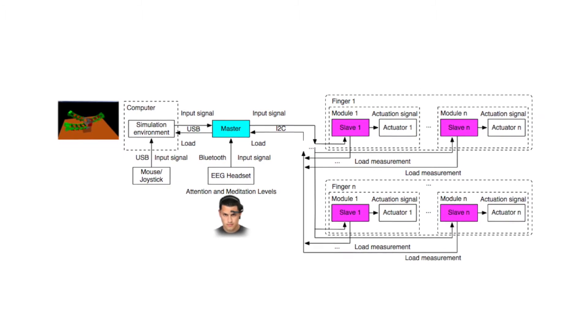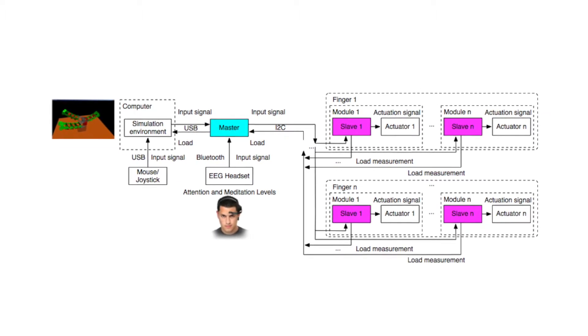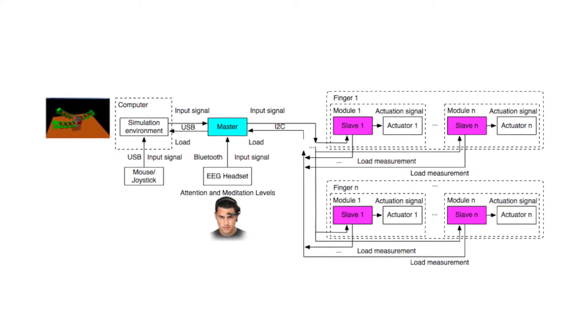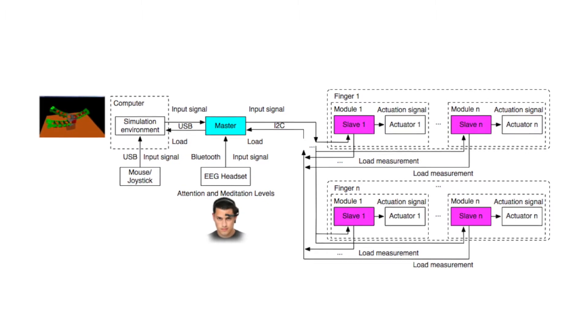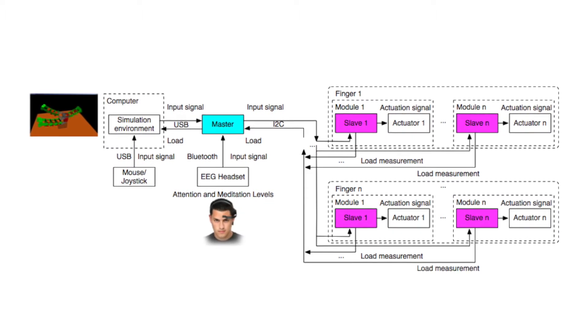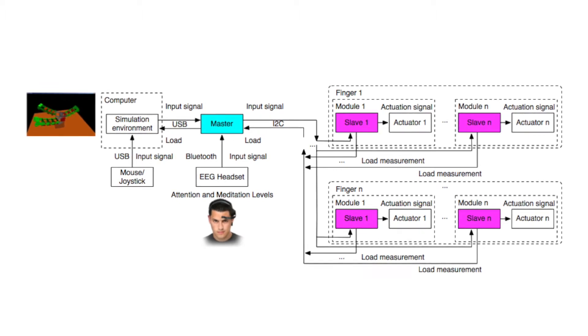In the previous versions of the framework, each finger of the prototype was controlled by a separate controller board. In this work, each module is independent, being controlled by a self-reliant slave controller board.